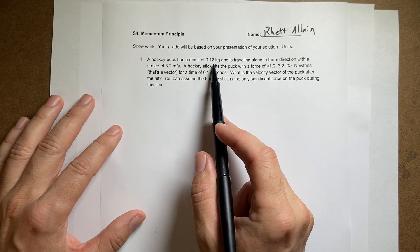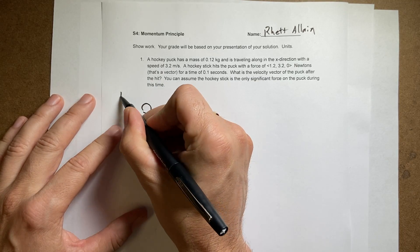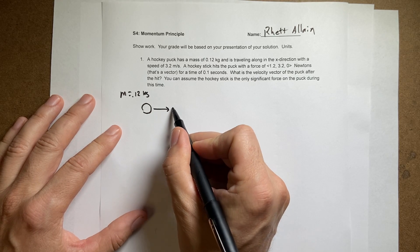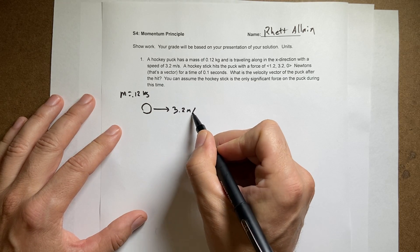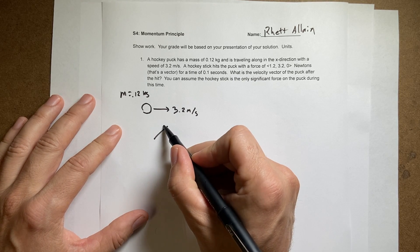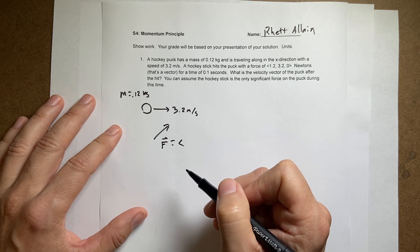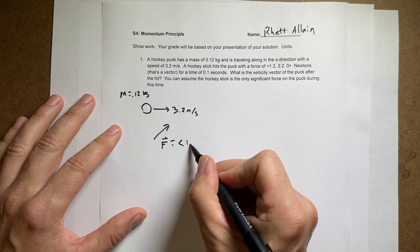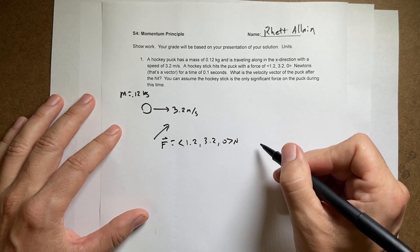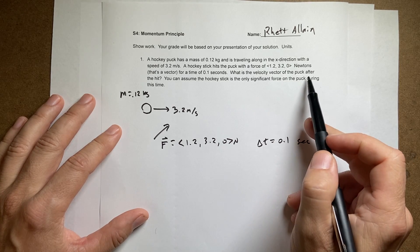So a hockey puck has a mass of 0.12 kilograms and is traveling in the X direction. Here's my hockey puck with a speed of 3.2 meters per second. Then there's a hockey stick with a force F. They give us a vector - I actually wrote this question - 1.2, 3.2, 0 newtons for delta T of 0.1 seconds. What's the velocity vector of the puck after the hit?